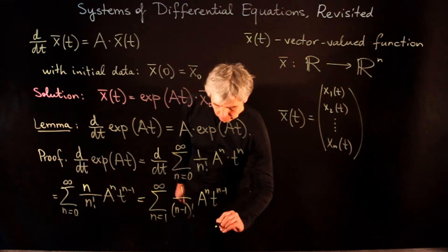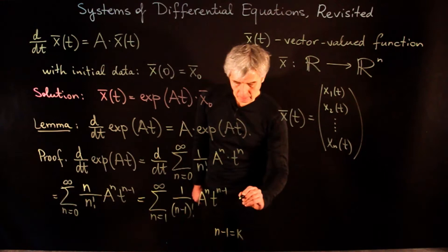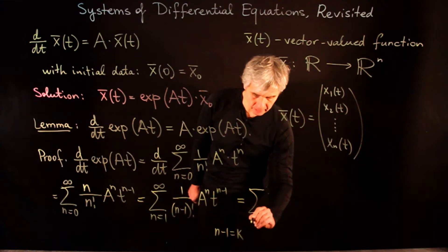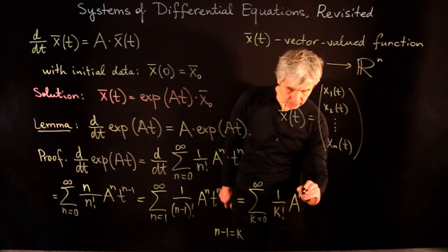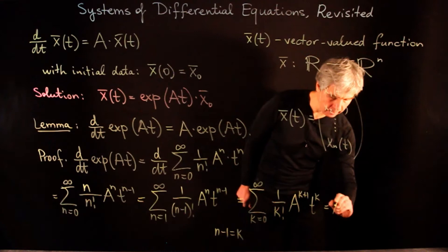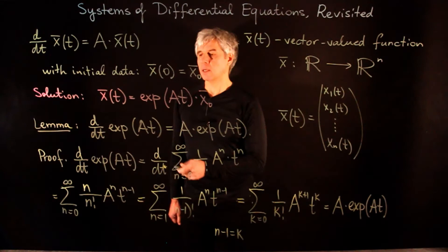Now we make a change of variables: let k = n - 1. Then k goes from 0 to infinity, and we get the sum over k from 0 to infinity of (1/k!) times A^(k+1) times t^k. We see that this equals A times the exponential of At.